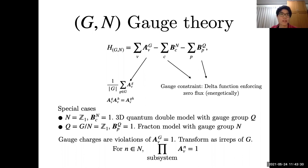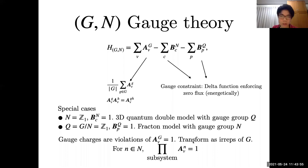In this model, the charge excitations are violations of the vertex operator. Like the quantum double model, they obey the group law of G, meaning excitations transform as irreducible representations of G. Different choices of the normal subgroup N realize different hybrid models. The choice of N determines the mobility condition: for each group element in the normal subgroup N, we have a conservation law for charges. So for each normal subgroup N, one can obtain a different hybrid fracton model.